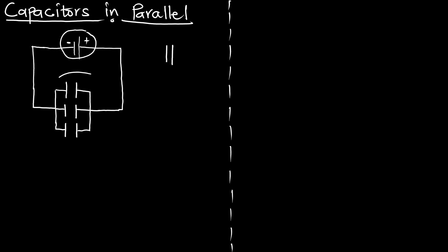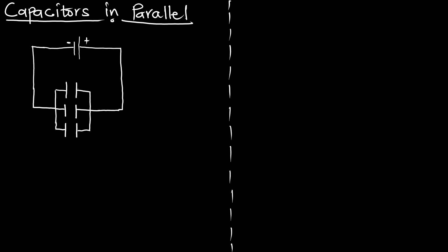Down here we have three capacitors arranged in parallel arrangement. Now we can see how we will charge these capacitors. If current or charge is flowing this way, this charge is going to distribute itself among capacitor one, capacitor two, and capacitor three, and they will come to form the same charge on the other side. The fact that the charge is distributing itself among the capacitors indicates that this arrangement is a parallel arrangement.